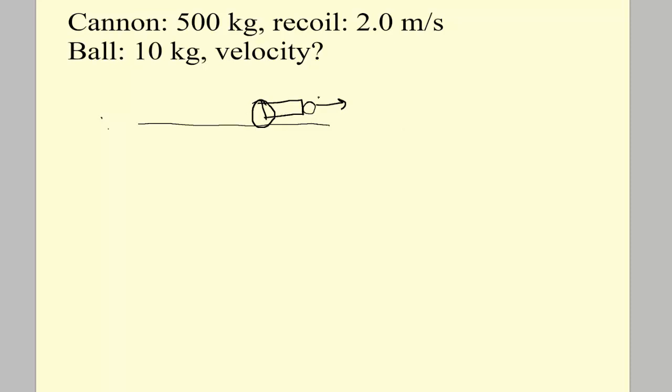So the mass of the cannon is 500 kg. And the recoil of the cannon is 2 m/s, so it's going to be going in that direction. So the velocity of the cannon, we'll call it negative 2 because it's going to the left. The mass of the ball is 10 kg, and the velocity of the ball we don't know.